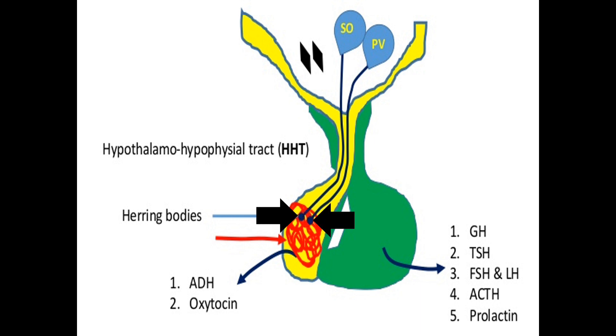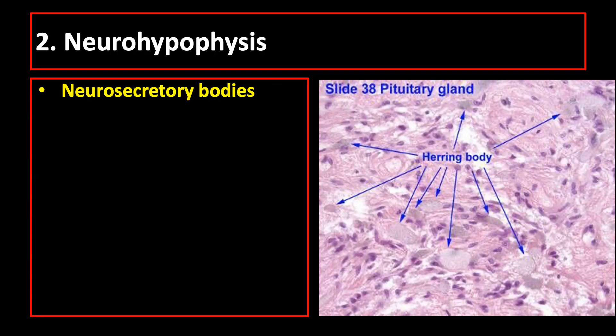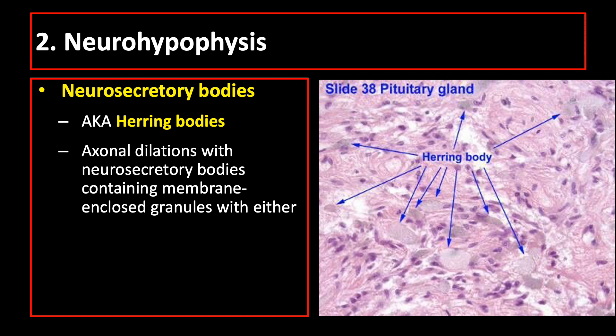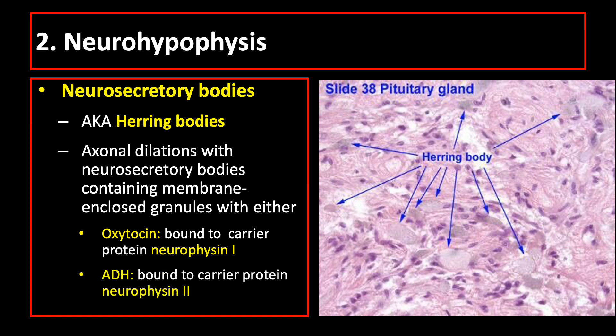Under light microscopy, the neurosecretory bodies or Herring bodies appear as faintly eosinophilic structures. These Herring bodies contain membrane-enclosed granules containing either oxytocin, which is bound to the carrier protein neurophysin-1, or antidiuretic hormone or vasopressin, which is bound to carrier protein neurophysin-2.